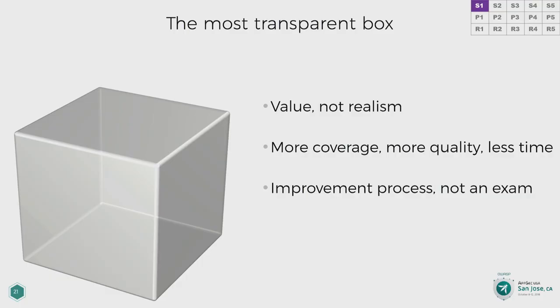I very strongly believe that if you want to get the most value out, you need to take a transparent box approach. You can take an opaque box approach where the tester has no clue what's going on inside, or you can take a transparent box approach where the tester sees exactly what's going on. A colleague came to me and said we need to test this client-server application that's communicating with the server — it's installed on a PC and it's encrypting its requests, but he thought it was storing a hard-coded key.